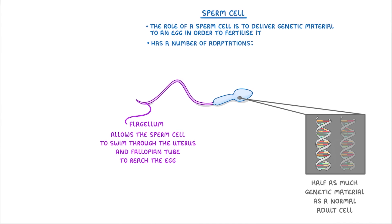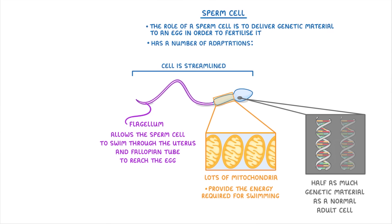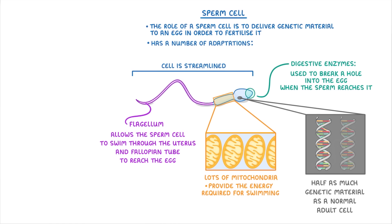And in a similar vein, the fact that the overall cell is really streamlined will also help it to swim along. They also have lots of mitochondria, which provide the energy required for all of that swimming. Finally, at the very front, sperm cells have loads of digestive enzymes, which are used to break a hole into the egg cell when the sperm reaches it.